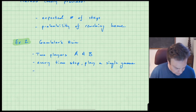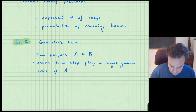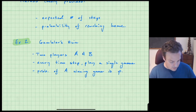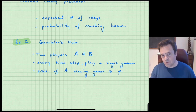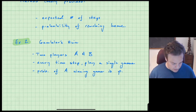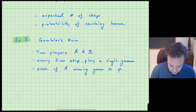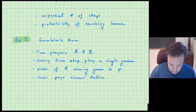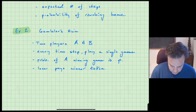The game works like this. The probability of A winning a game is p — that's fixed. So there are two possible outcomes: either player A wins or player B wins, with the probability of player A winning being p. After the game, the loser pays the winner one token, or one pound, or one dollar — whatever unit you like. They just keep on playing; you repeat the process.